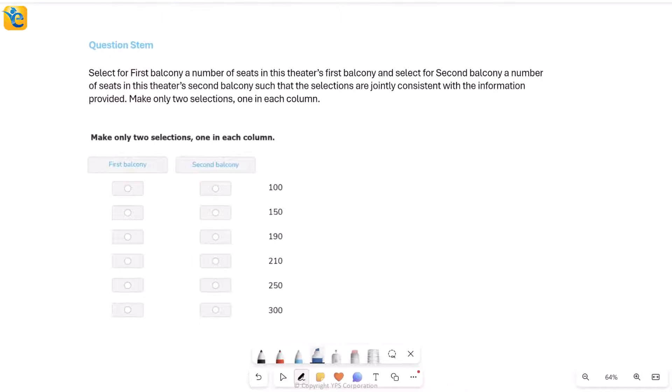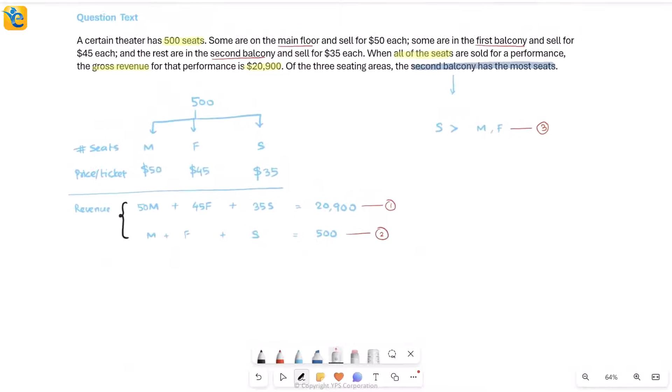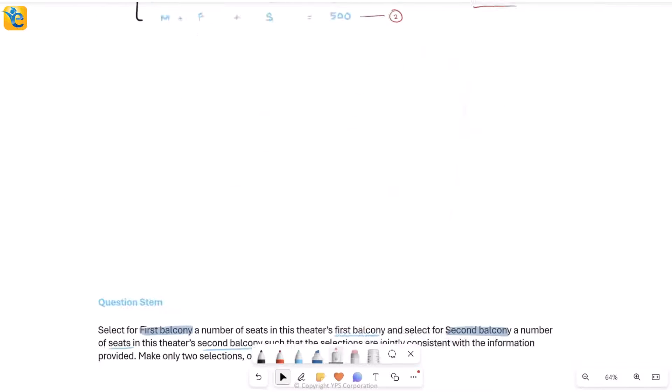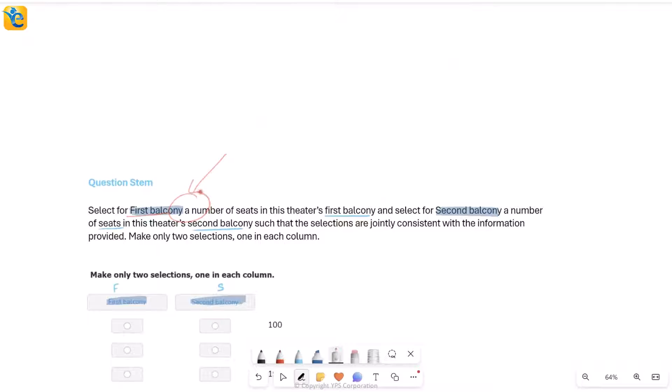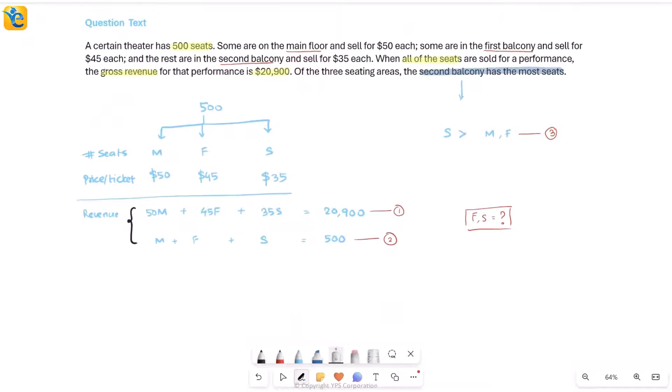Let's see what the question is asking. It says select for first balcony a number of seats in this theater's first balcony, basically you have to find the value of f, and similarly for second balcony, how many seats the second balcony has. All of this should be consistent with the information we have. Now I have a goal: to find the values of f and s from the table. This is three unknowns and two equations, so there is a high likelihood I will not be able to uniquely determine the values.